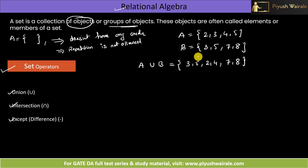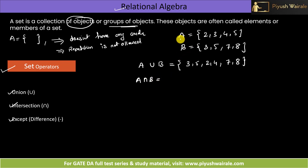So A union B consists of all elements of A and B, and elements present in both sets are stored only once. Now, what is A intersection B? A intersection B is basically the common elements of both sets A and B. The common elements are 3 and 5, so the answer is {3, 5}.